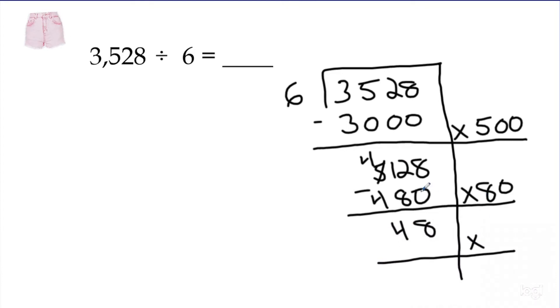And now again, I know six times eight is 48. So I can actually take that out exactly. I have nothing left over, which means I'm going to count the groups on the side right here. And 3,528 divided by six is 588.